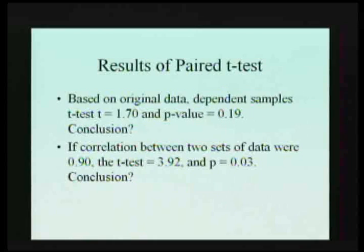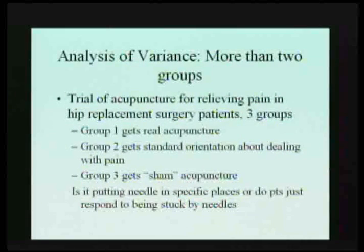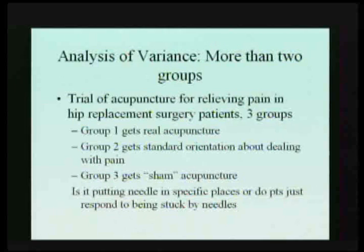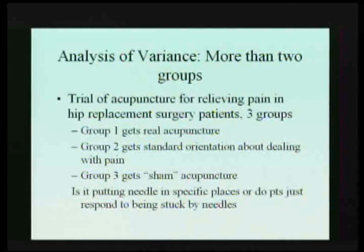So in the case where the correlation coefficient is 0.90, we would get a significant difference between the two sets of measures. I'm going to jump into analysis of variance if there are no questions about t-tests. T-tests are nice, but more often than not, we're not just working with two sets of measures or two groups.